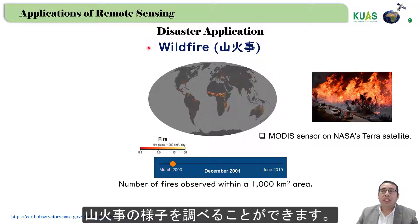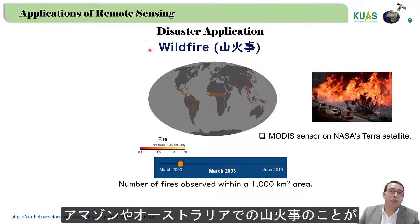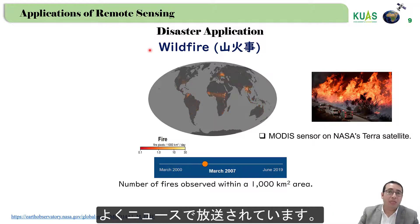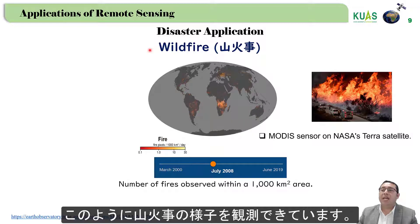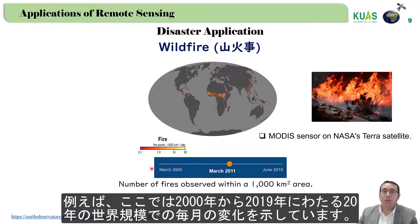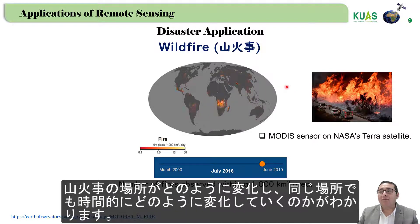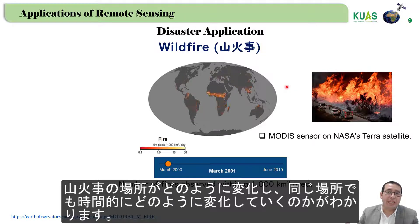For the disaster application, we can monitor wildfires. In the news, we hear about wildfires in the Amazon or in Australia. We can observe wildfire activity globally from 2000 to 2019 — over 20 years — at a monthly scale, allowing us to check how wildfires change between different places and also for the same place at different times.